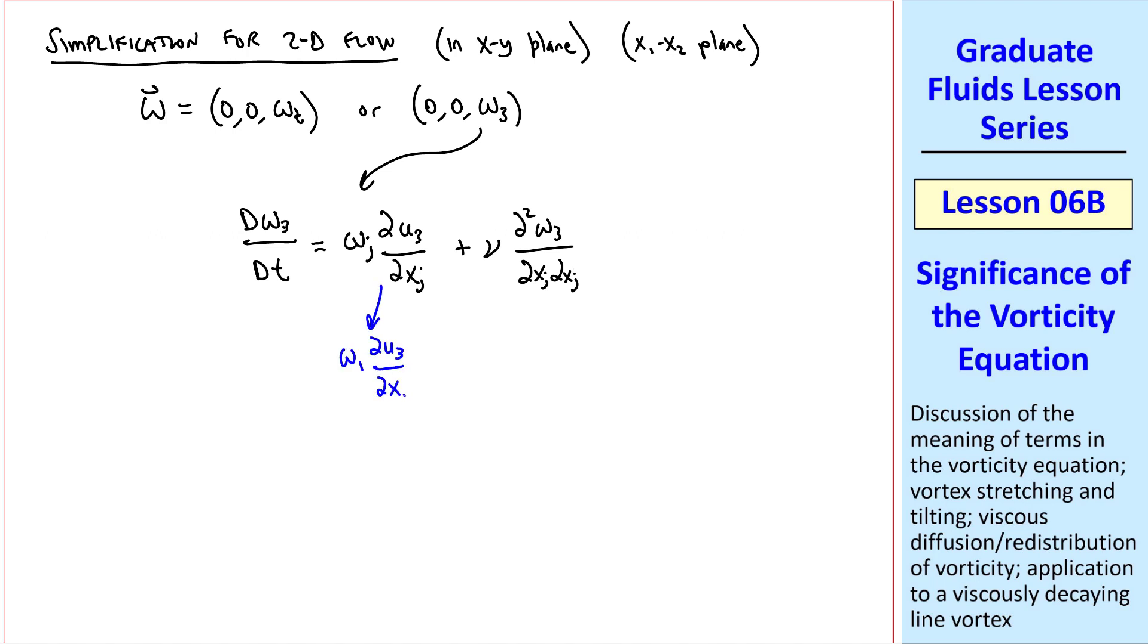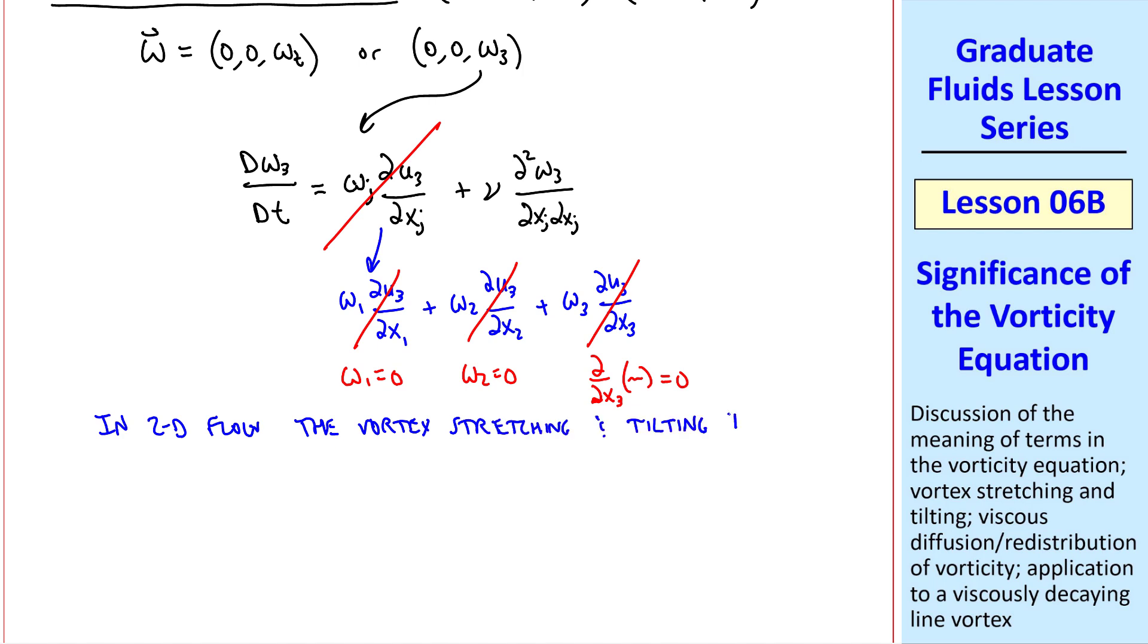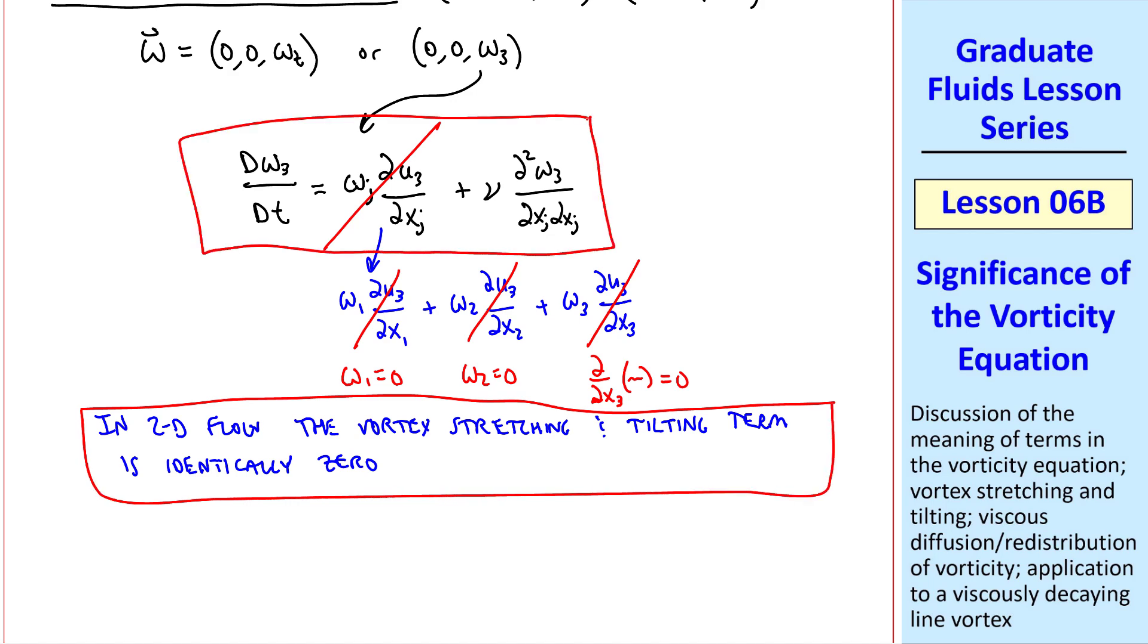If we expand this term, we have omega 1 del U3 del X1 plus omega 2 del U3 del X2 plus omega 3 del U3 del X3. But this term is zero because omega 1 is zero, as we see here. Similarly, since omega 2 is zero, this term is also zero. And for 2D flow, delta X3 of anything is zero. Thus, this entire term goes away. So we state that in 2D flow, the vortex stretching and tilting term is identically zero. Thus, the vorticity equation is greatly simplified without that second term.